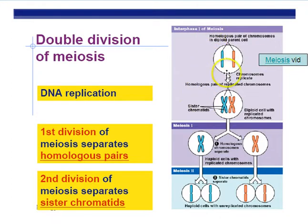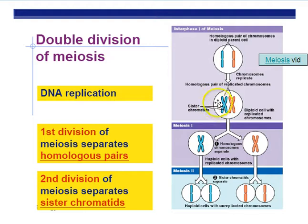During interphase of meiosis, we have to make copies of the chromosomes. That's during the S phase of interphase — every chromosome gets a sister chromatid. That happens during meiosis as well. Here we have two chromosomes — not a human cell — we have 46 being copied during the S phase of interphase.